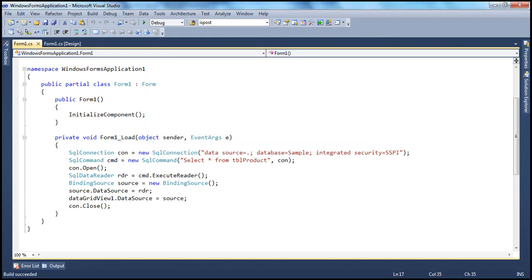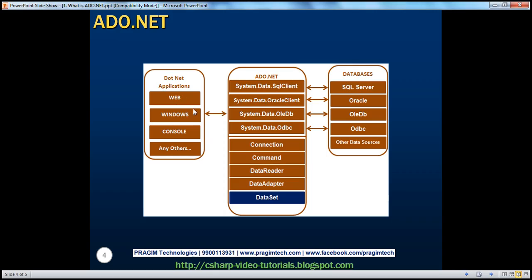No matter what type of .NET application you are developing, if you want that application to work with some databases, you will have to use ADO.NET. Any type of .NET application uses ADO.NET. Within ADO.NET, we know there are several objects: Connection Object, Command Object, Data Reader Object — these three we have seen today in a simple example. And there is also a Data Adapter Object. We'll talk about these objects in detail going forward.